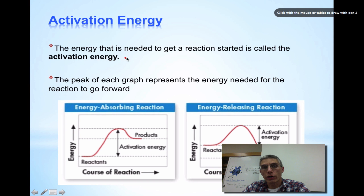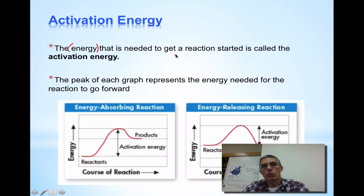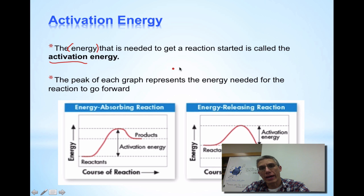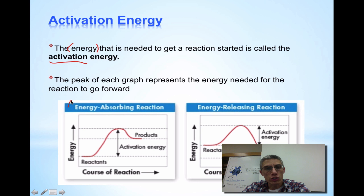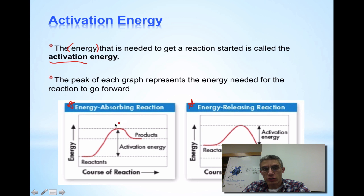Now that you have the basic idea of what a chemical reaction is, we also need to understand that there is going to be a certain amount of energy necessary to make sure that reaction gets started. We call that energy activation energy. It's easy to know what this energy is used for because it's used to activate the reaction. Now down here towards the bottom, we're looking at two different types of reactions: one is called an energy-absorbing reaction and one is called an energy-releasing reaction. There's one that actually takes a lot of energy to go from the reactants to the products.